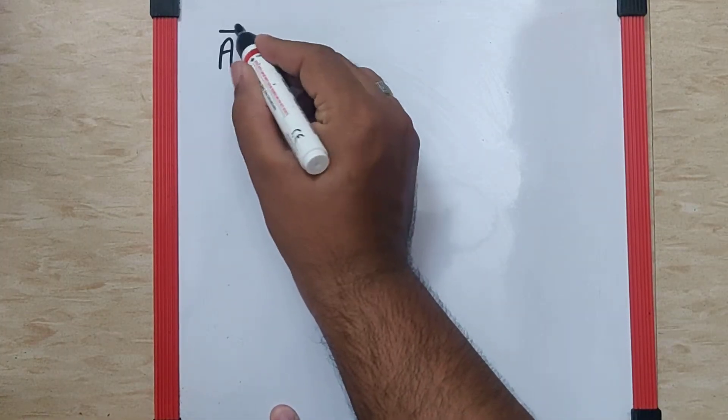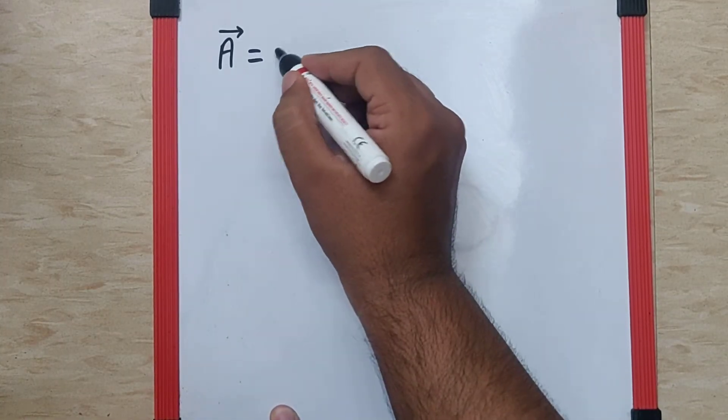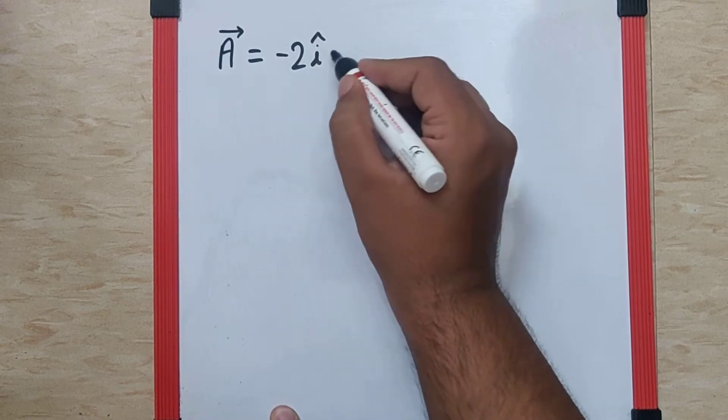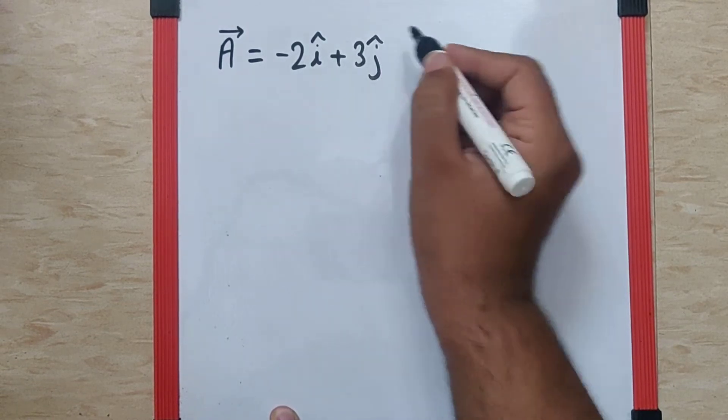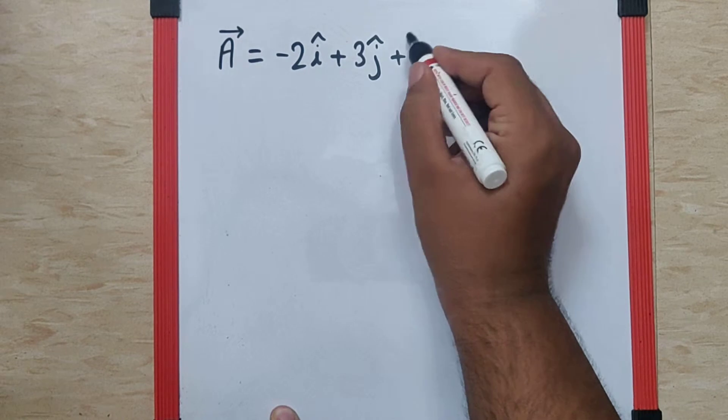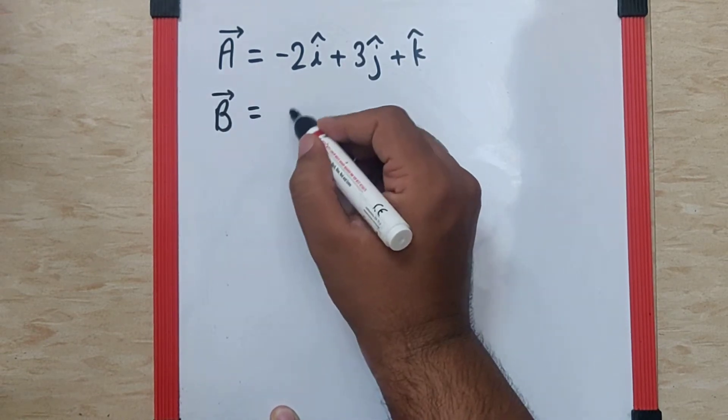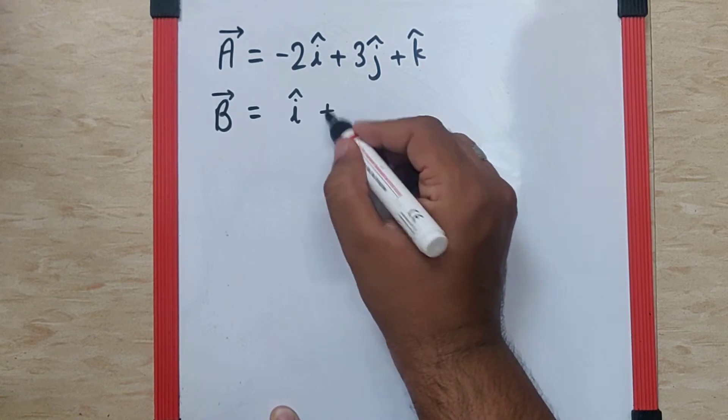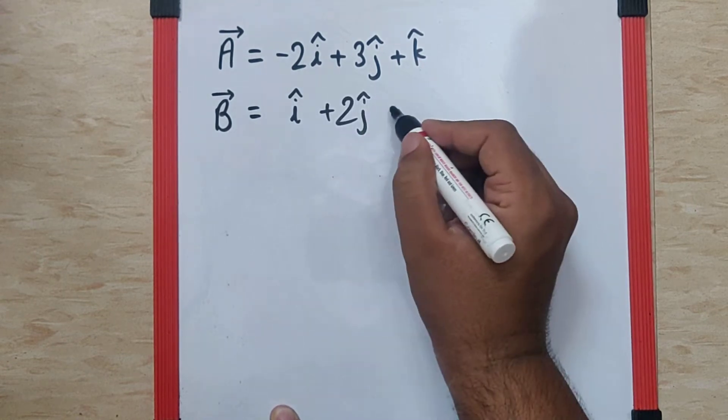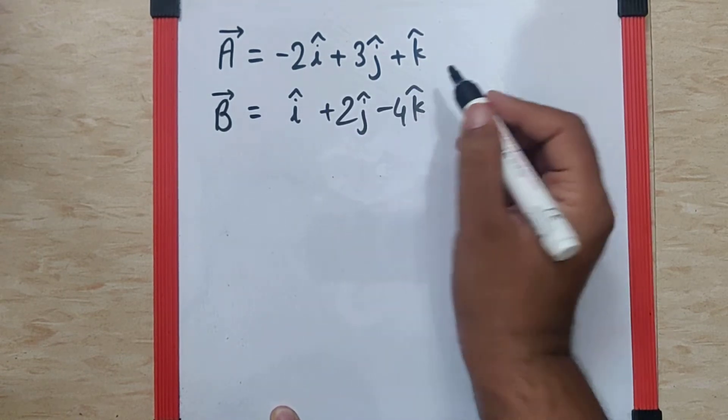I can assume A bar to be the first vector which is minus 2i cap plus 3j cap plus k cap and B bar to be the second vector as i cap plus 2j cap minus 4k cap.